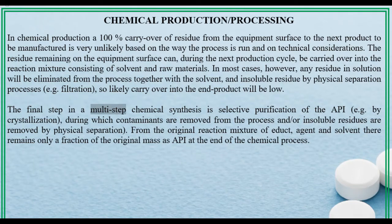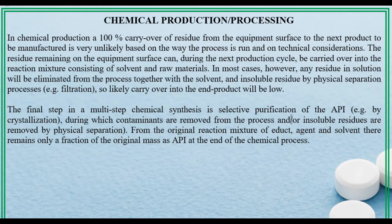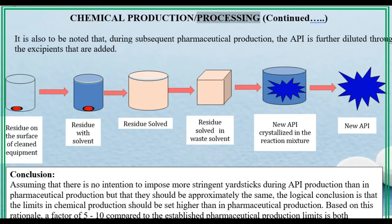The final step in a multi-step chemical synthesis is selective purification of the API — for example by crystallization — during which contaminants are removed from the process and/or insoluble residues are removed by physical separation from the original reaction mixture of the product, agent, and solvent. There remains only a fraction of the original mass as API at the end of the chemical process. It is also to be noted that during subsequent pharmaceutical production, the API is further diluted through the excipients that are added.